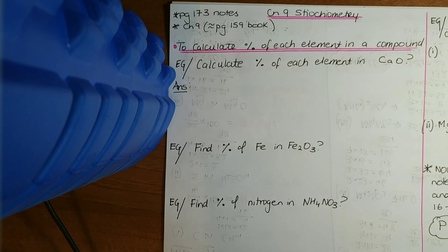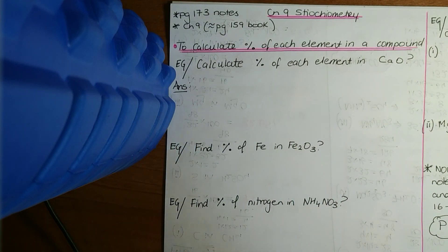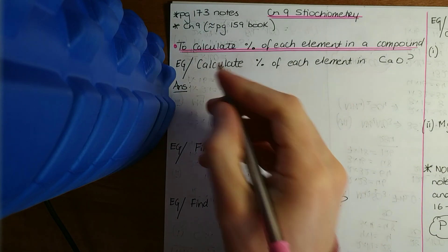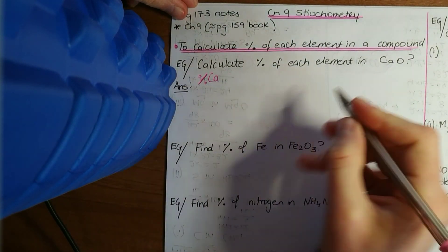So the first type here is to work out the percentage of each element in a compound. You want to see what percentage of a compound is made up of a certain element. This first type: calculate the percentage of each element in CaO, calcium oxide.